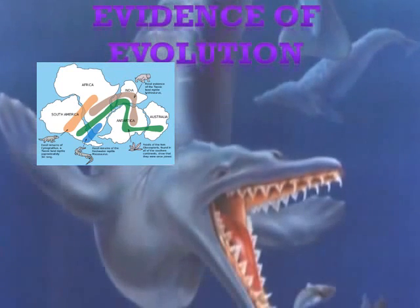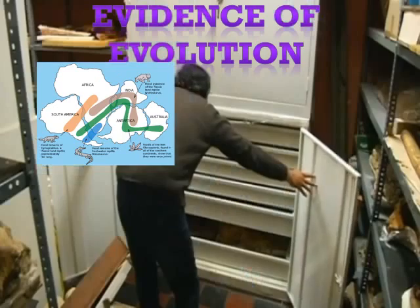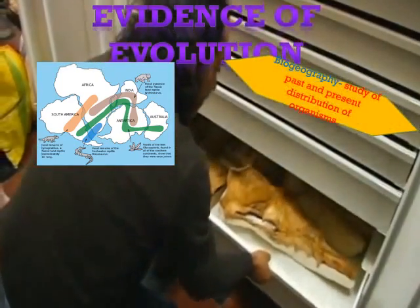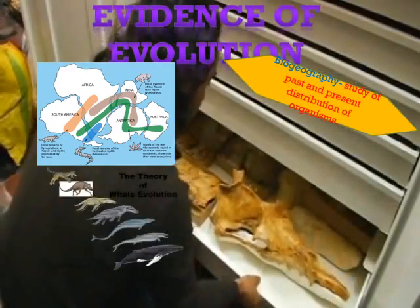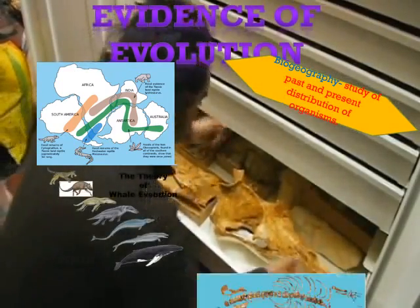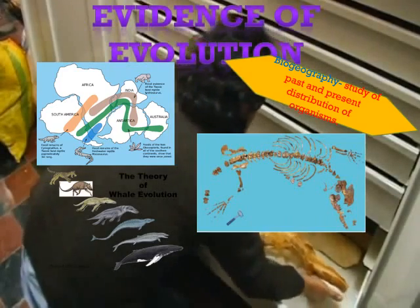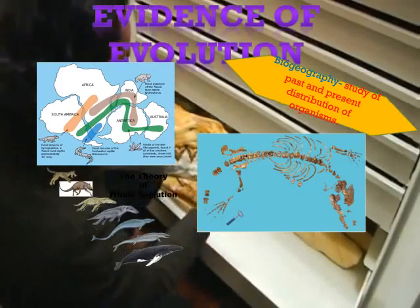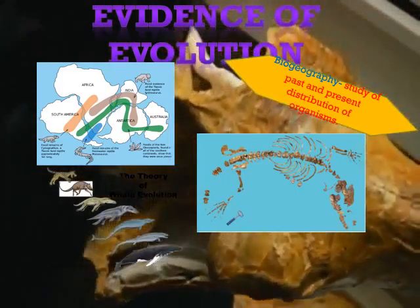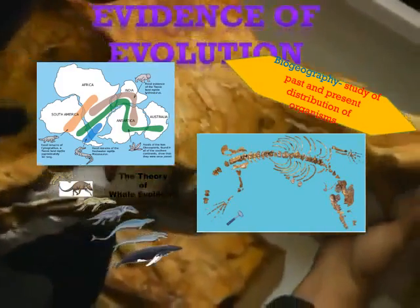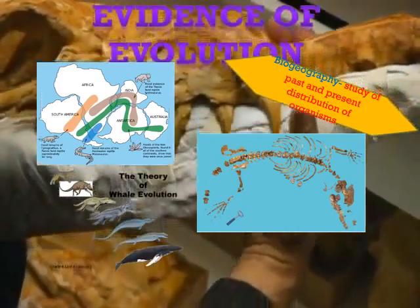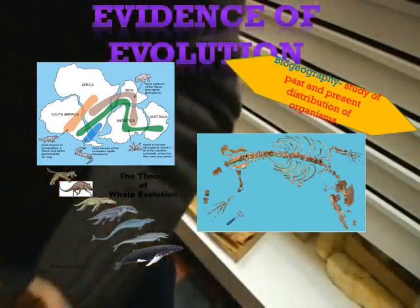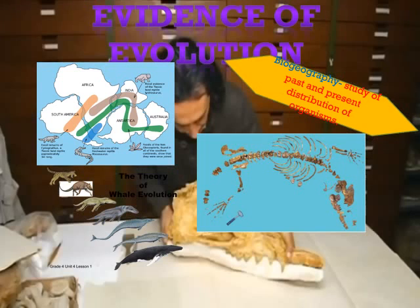Darwin recognized the importance of patterns in the distribution of life — the subject of the field called biogeography. Patterns in the distribution of living and fossil species tell us how modern organisms evolved from their ancestors. Darwin also struggled with what he called the imperfection of the geological record. His study of fossils convinced him and other scientists that life evolved, and many recently discovered fossils trace the evolution of modern species from extinct ancestors.